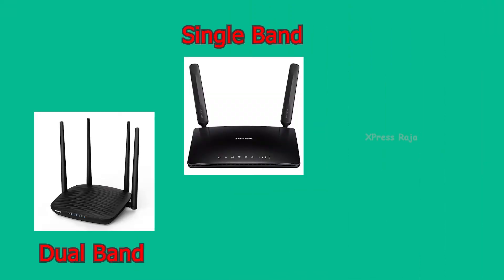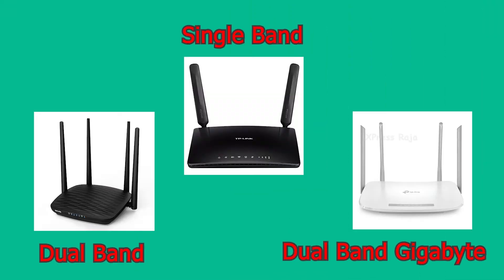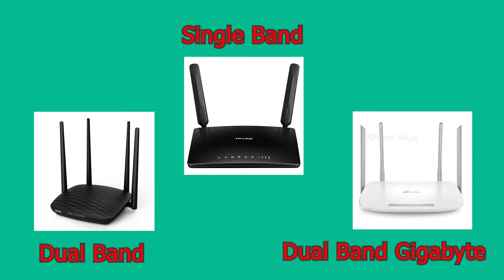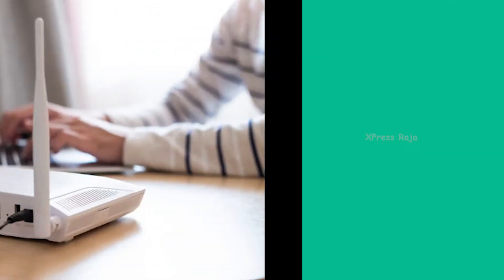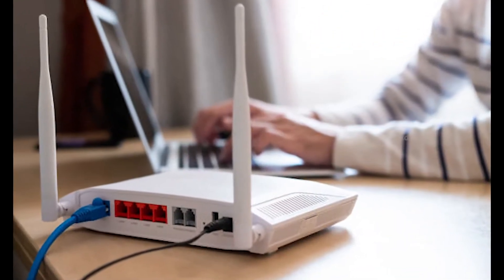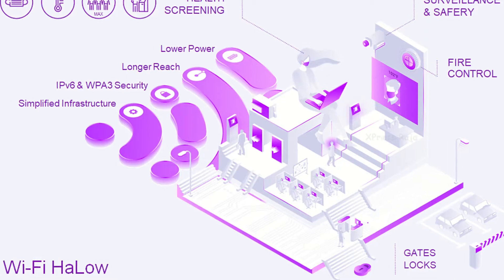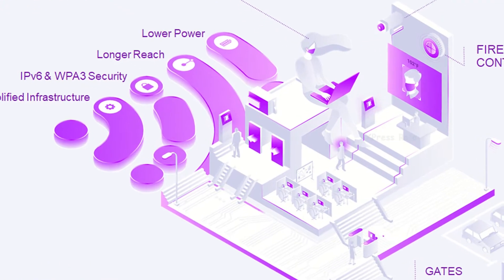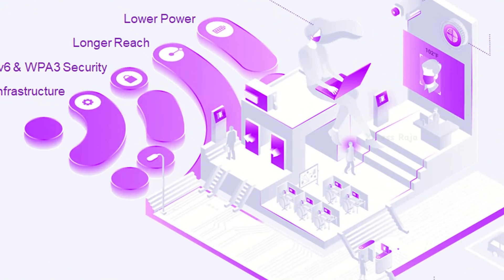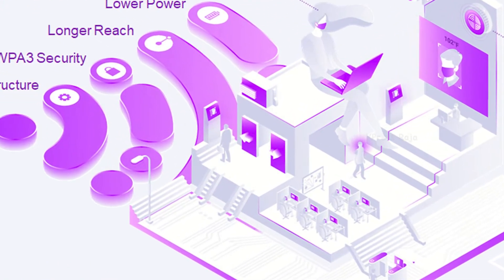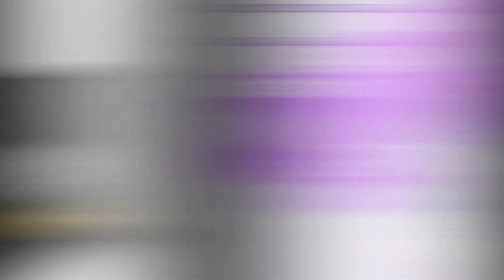There are 3 specifications: Single-band, Dual-band, and Gigabyte. In these 3 specifications, you need to consider pricing. We use the Wi-Fi router in our office, and also for industrial and commercial use. The features and specifications will change the pricing.